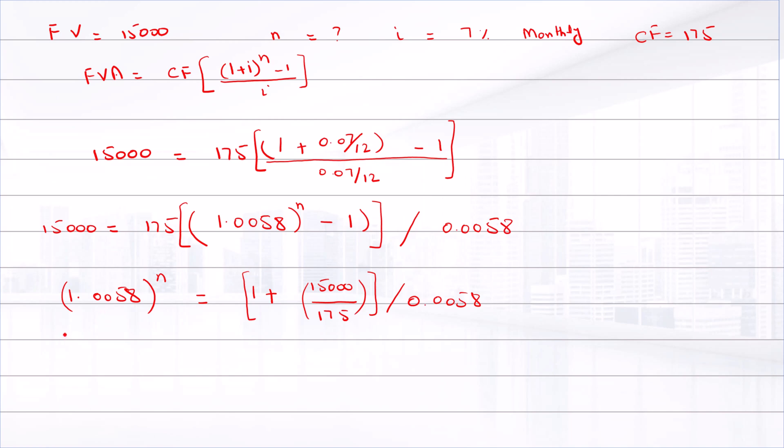By taking log of these values, log of 1.0058 to the power n is equal to log of 1.5, so n is equal to log of 1.5 divided by log of 1.0058, that is equal to 68.37 payments.